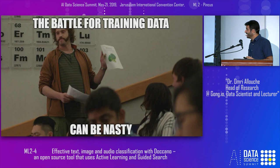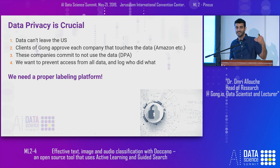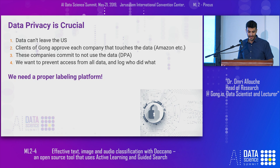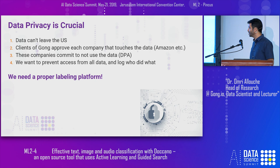At Gong, recently in the past year, there are other considerations we have to take into account. Data privacy, GDPR, and other laws are crucial right now. For us, the data can't actually leave the US — it has to reside on servers in the US. All of Gong's clients have to approve each provider we use. So if we want to switch from AWS to Google Cloud, we have to go to all companies we already have and have them sign off. All companies we use as services sign a DPA, meaning they will not use the data for anything else.